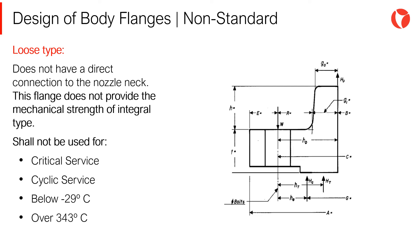Loose type flanges do not have a direct connection to the nozzle neck. This method of attachment is not considered to give the mechanical strength equivalent of integral attachment. Flanges that fall under this category shall not be used for the following services: critical service, cyclic service, below minus 29 degrees Celsius service, and over 343 degrees Celsius service.